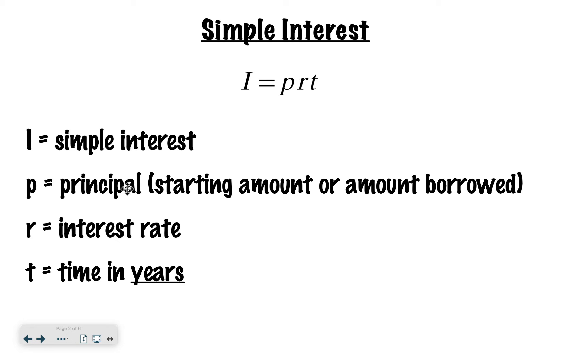P stands for the principal, which is another way of saying the starting amount or the amount borrowed. And then R represents the interest rate and we want it in decimal form. And then T represents time in years. It's really important that you remember that this represents years.